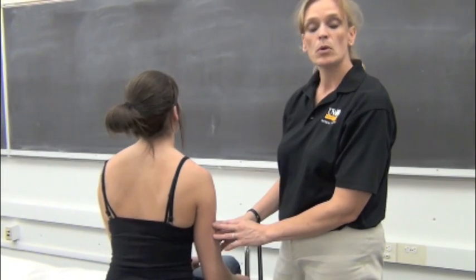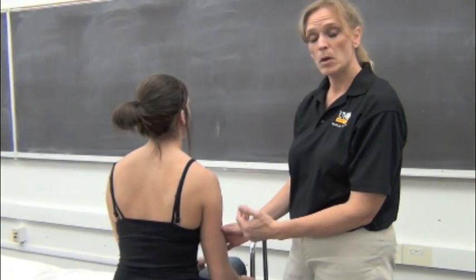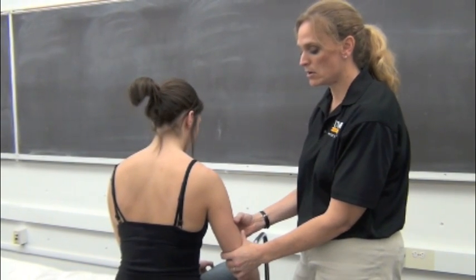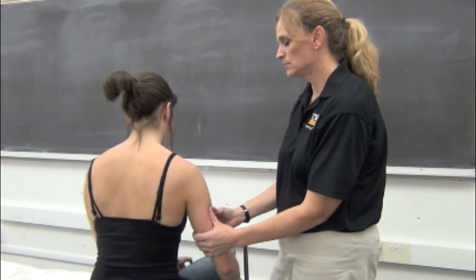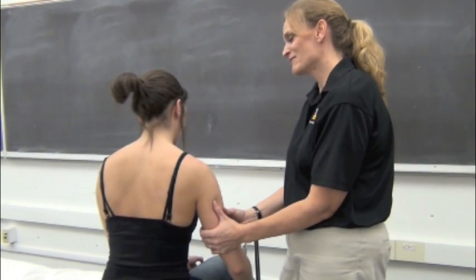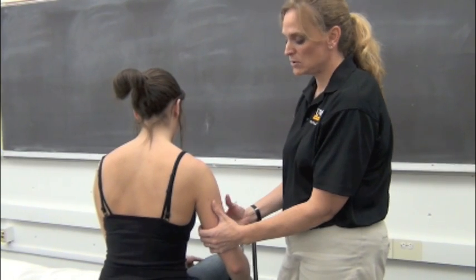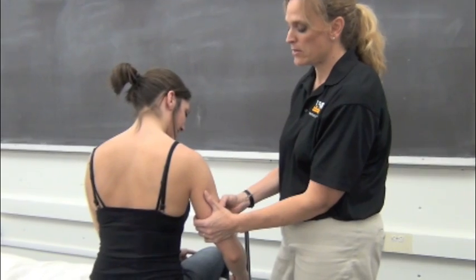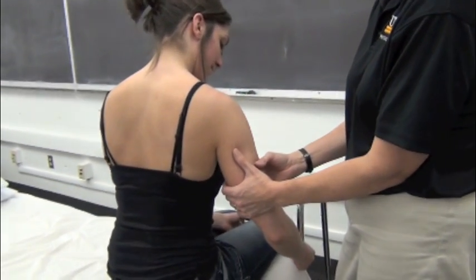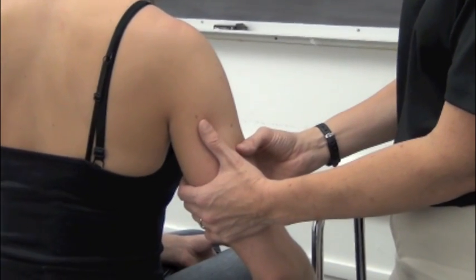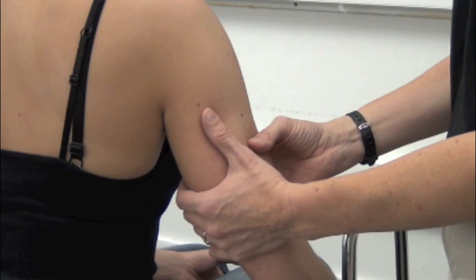The brachial artery is also important to palpate — it's one we typically palpate in children during CPR, but we'll also need to palpate the brachial artery in older adults. Get on the medial aspect of the belly of the biceps and then press along the humerus. The median nerve and ulnar nerve also travel on either side of the brachial artery, so you need to be cautious, but you can feel a strong pulse right there.